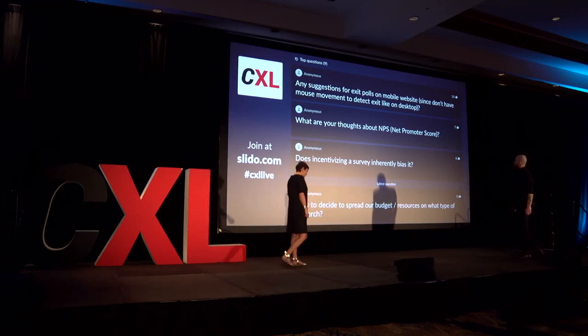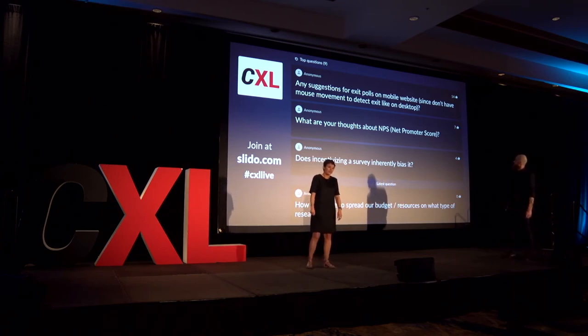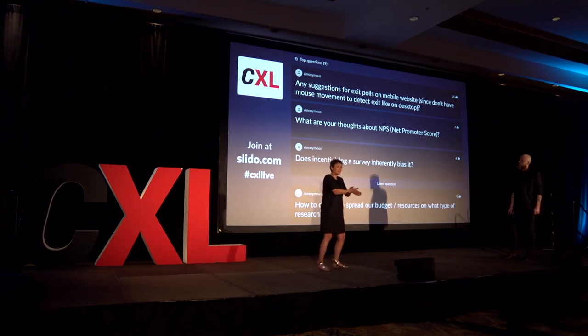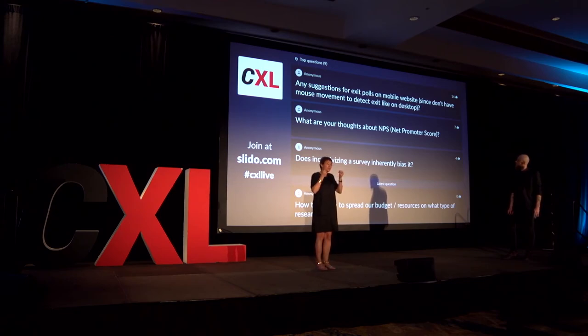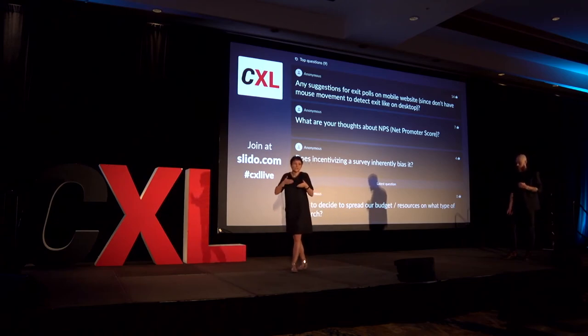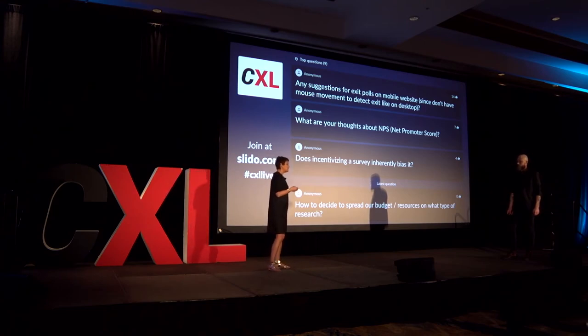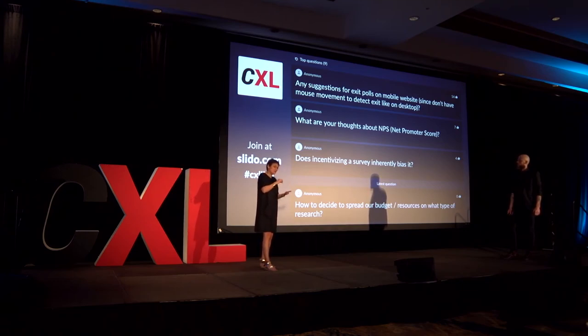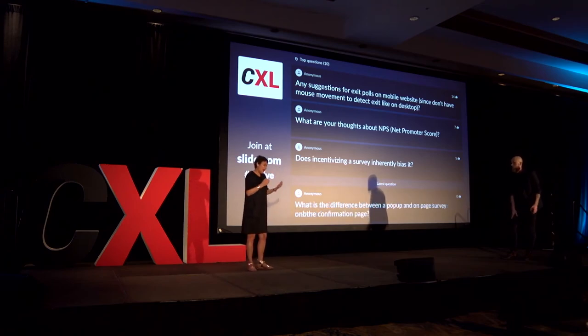Any suggestions for exit polls on mobile websites, since they don't have mouse movement to detect exit like on desktop? This is a great question. There is no exit on mobile. You will always have to go for a delay survey, and you'll have to really look at the page where you want to do the exit intent. What's the best time to show this? Is it timing? Is it time on page combined with a certain scroll depth? Have a look at your analytics, set the trigger, and watch your answers. If almost zero come in, it's coming too late. If you get a lot of answers but all of them are 'I haven't even looked at this page yet,' you've set it too soon. This is also something you need to experiment with — try a few different settings.